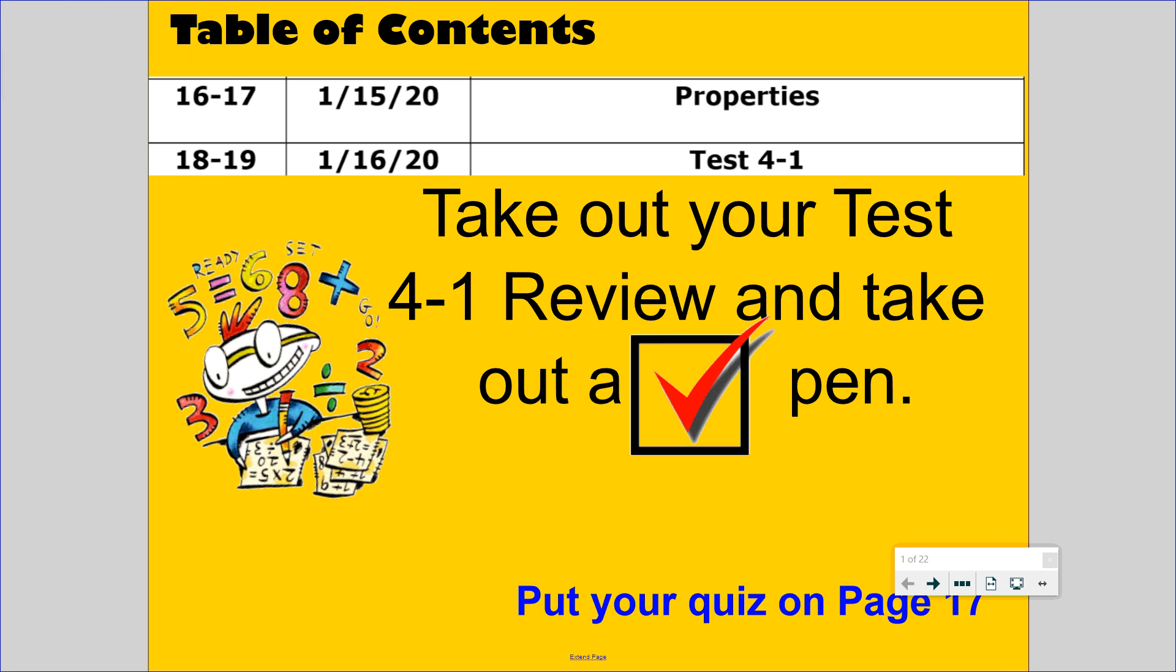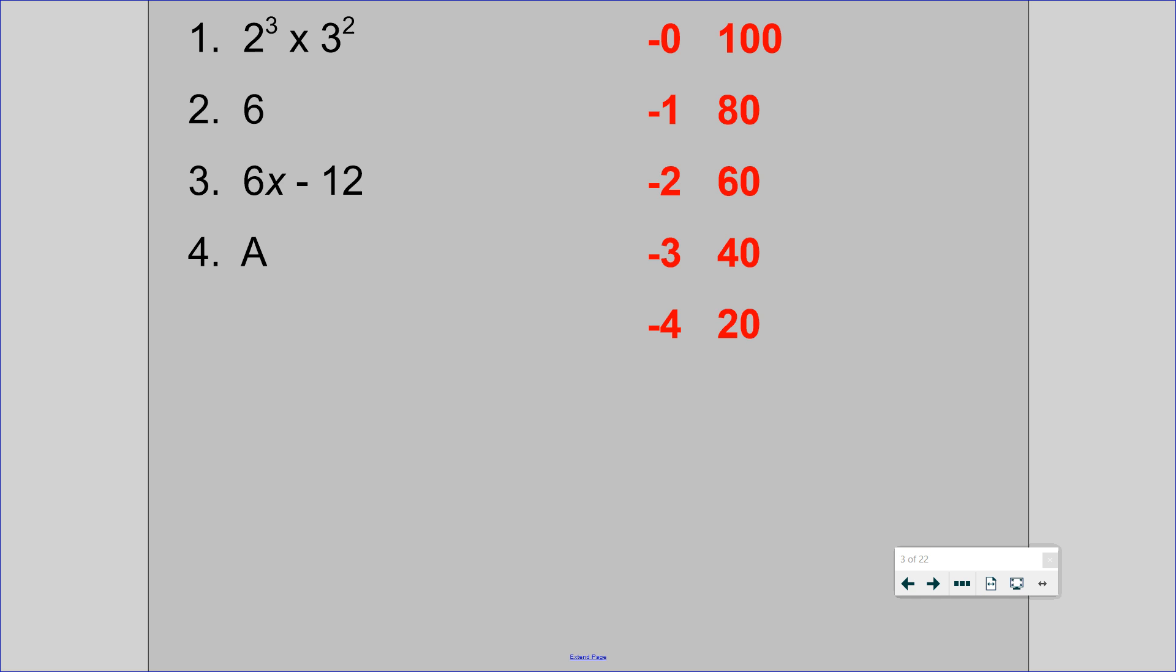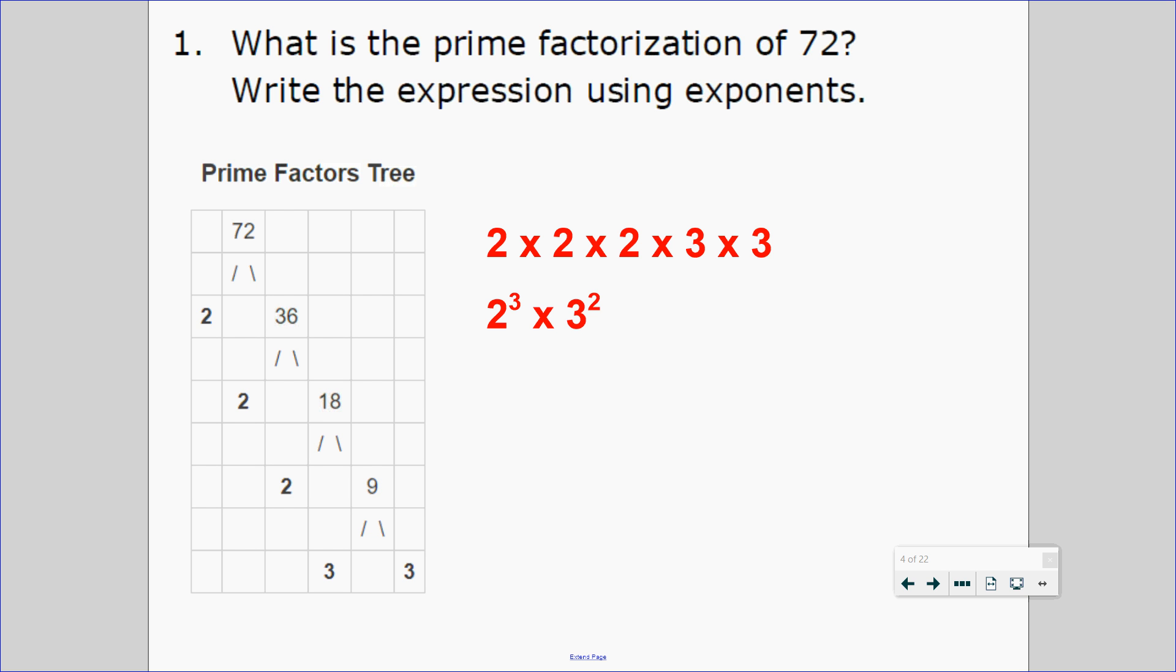Welcome, this is to prepare you for Test 4-1 for Academic. In order to be successful, you have to know three major things: prime factorization, order of operations, and simplifying expressions such as properties and distributive property.